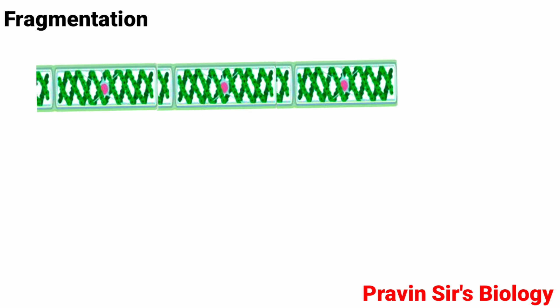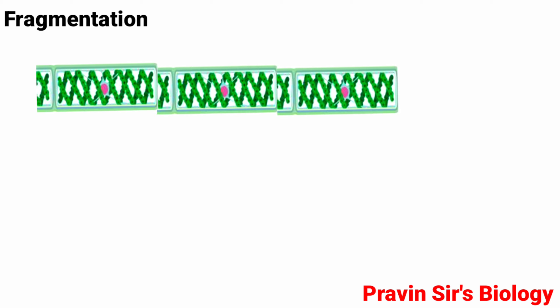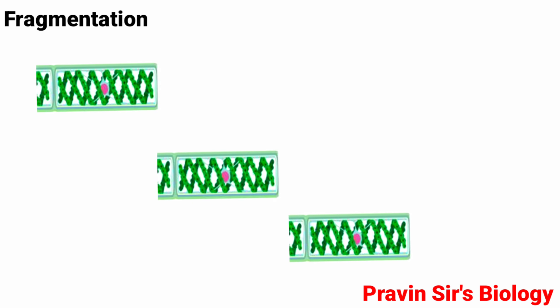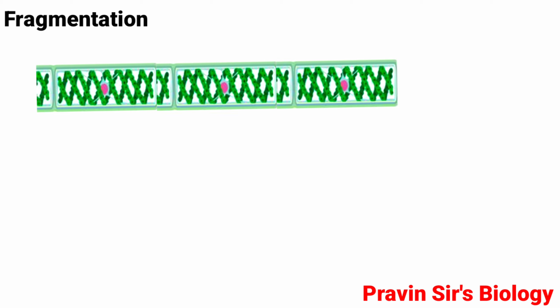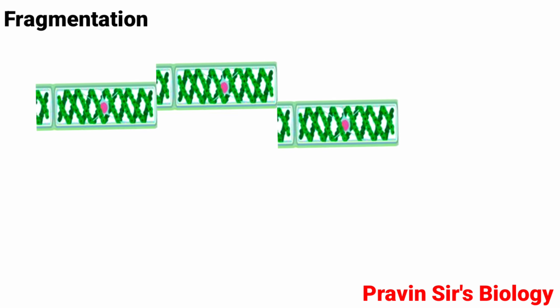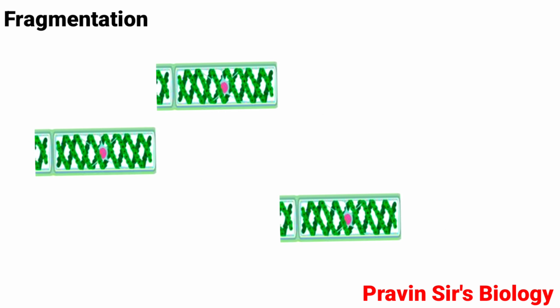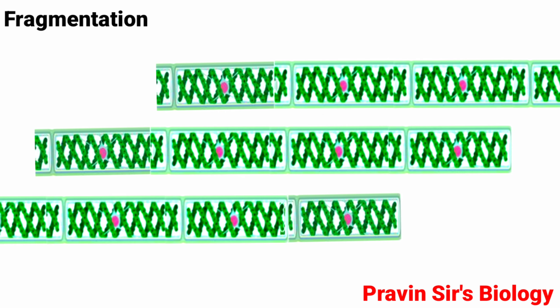Fragmentation: Multicellular organisms can break into fragments due to one or the other reasons. The organism breaks into fragments and each fragment grows into a new individual. Example: Spirogyra.